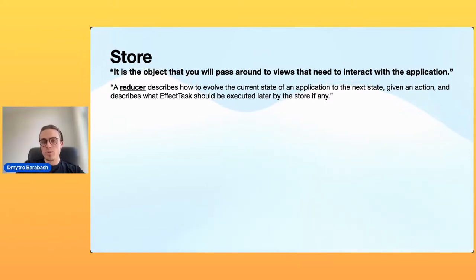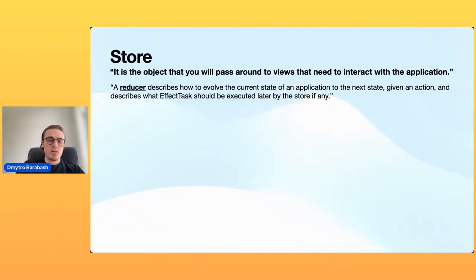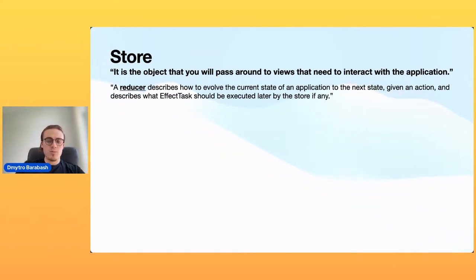A Reducer describes how to evolve the current state of the application to the next state given an action, and describes what effect tasks should be executed later by the Store. It has the name 'reducer' because it reduces — the same as native higher-order functions that take a function and return a function, so logic can be transformed. Reducers are monoids and Brandon Williams proved this in his speech on the Functional Swift YouTube channel. The main idea is to reduce side effects and make your reducer pure — you fire something and forget, but effects can return an optional action into the Store. Multi-threading bugs are not TCA's responsibility. Currently any reducer is softly deprecated — we can have as many reducers per screen as we want, allowing better separation of business logic.